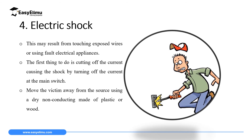The fourth common accident in a physics laboratory is electric shock. Electric shock may result from touching exposed wires or using a faulty electrical appliance. The first thing to do in case of electric shock is to cut off the electric current — identify the position of the electric switches and put off the main switch. After switching off the current, the second step is to move the victim away from the source using a dry non-conducting material made of plastic or wood. Do not rush to move the victim before switching off the main switch.